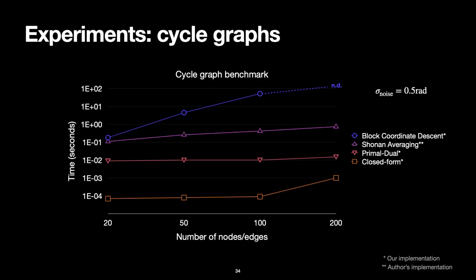When it comes to cycle graphs, we built random cycles with random rotations for a noise level of 0.5 radians standard deviation. We benchmarked block coordinate descent and Shonan averaging, which rely on semi-definite relaxation, our primal-dual method, and the closed-form solution. Not surprising, the closed form is much faster, but we can see a considerable difference between the primal-dual and the other two.